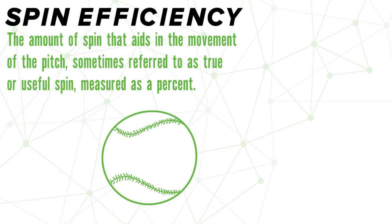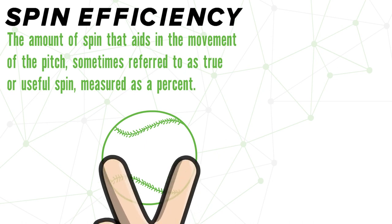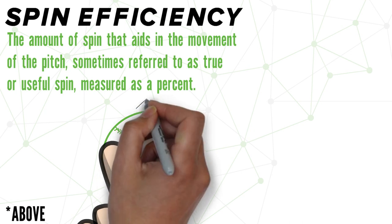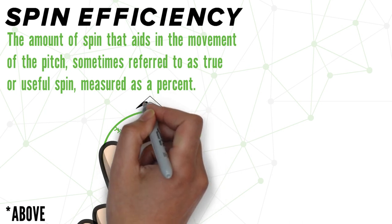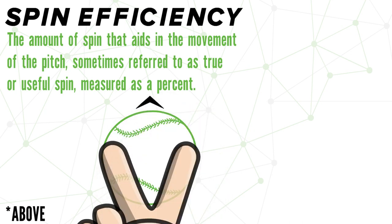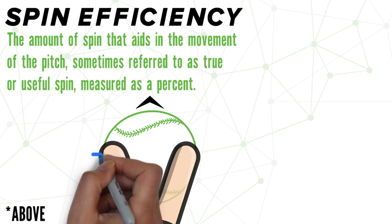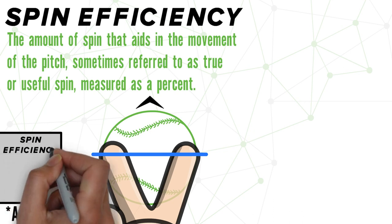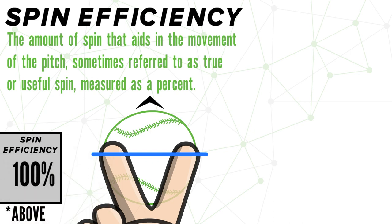So what does that really mean? Let's take a look at a quick example. Picture a pitch being released as viewed from above, traveling towards home plate, which in our case is going to be the top of the screen. As this pitch rolls off the fingers, it will have a perfectly straight spin axis, which will give you a spin efficiency score of about 100%.